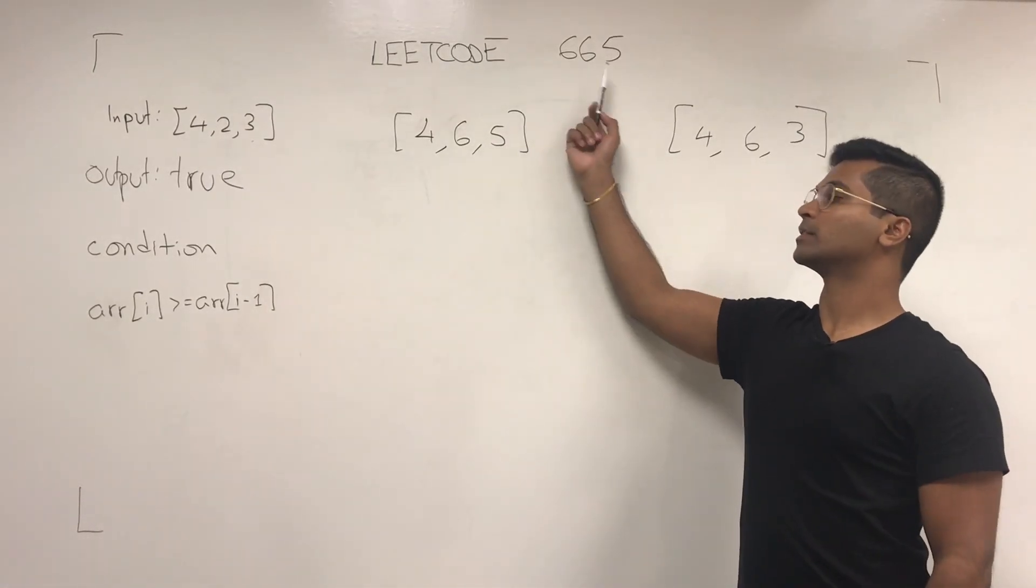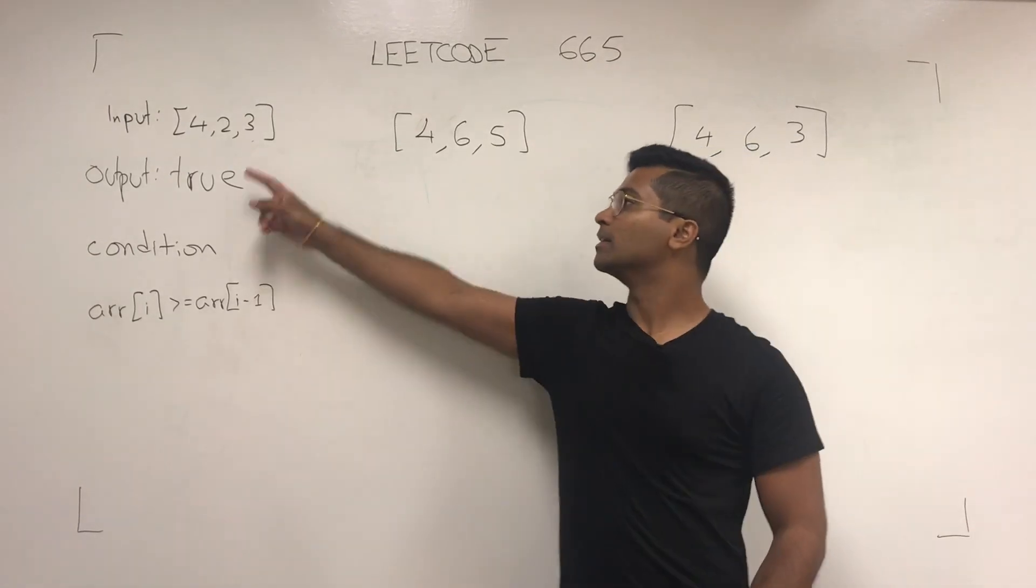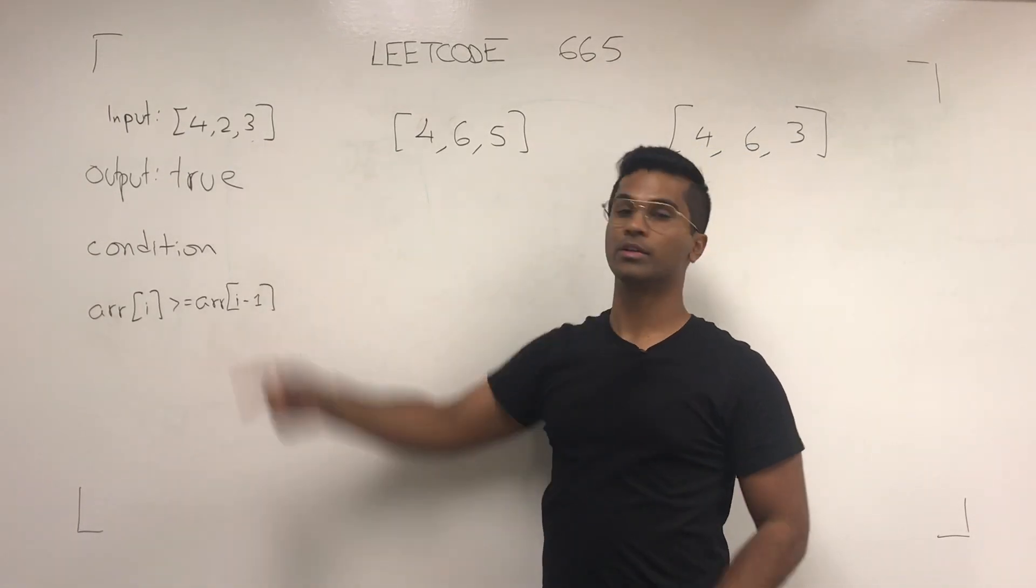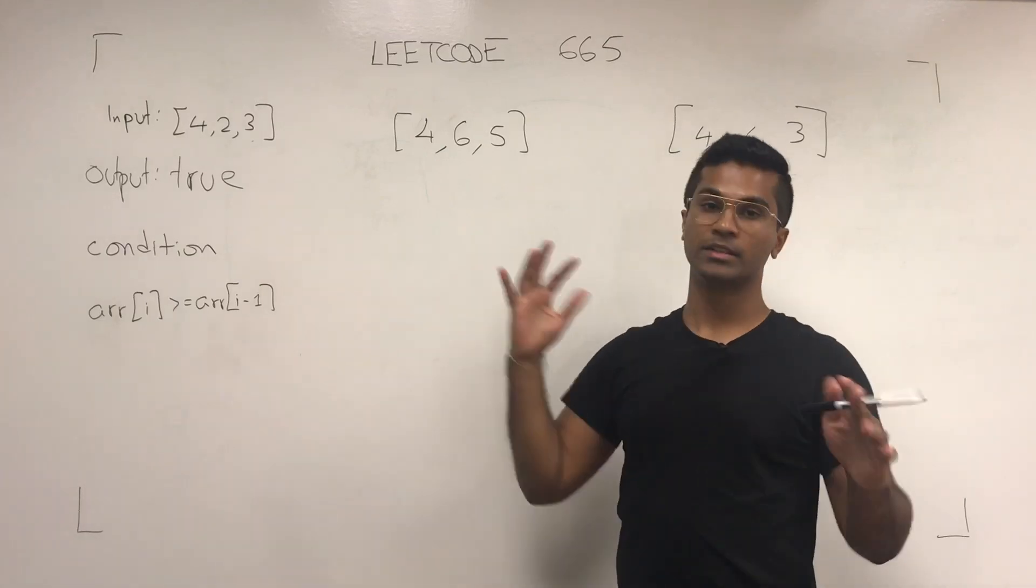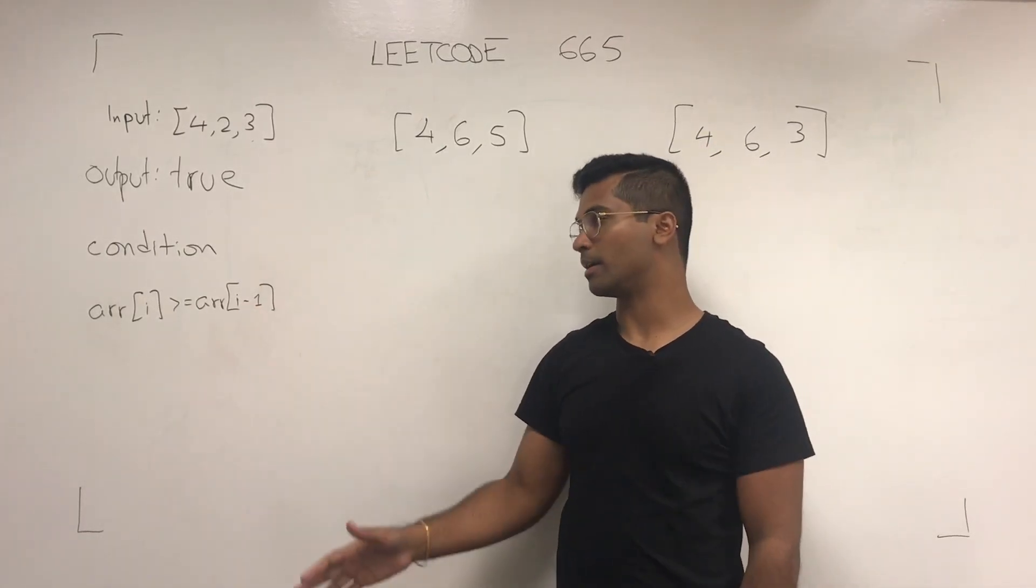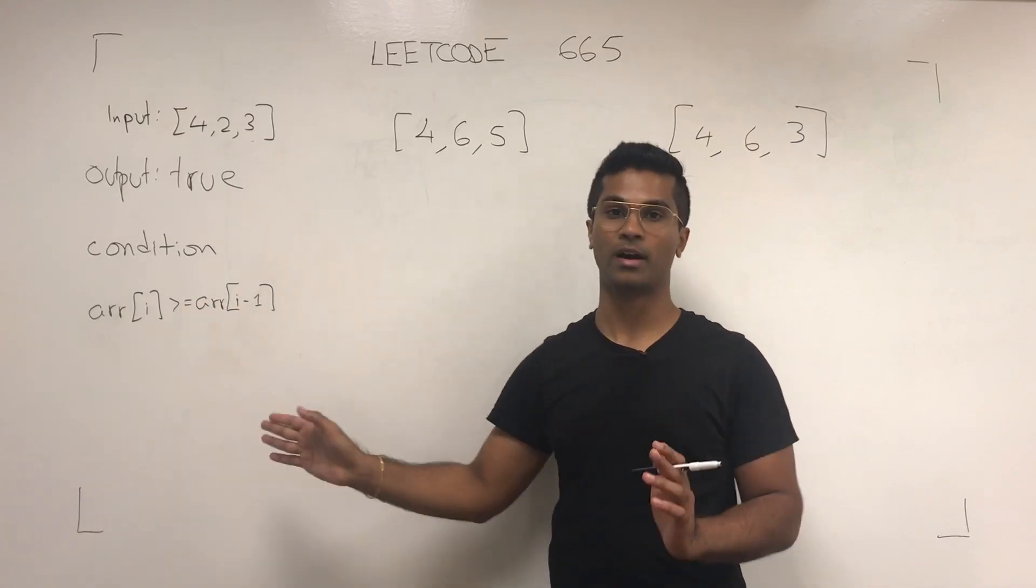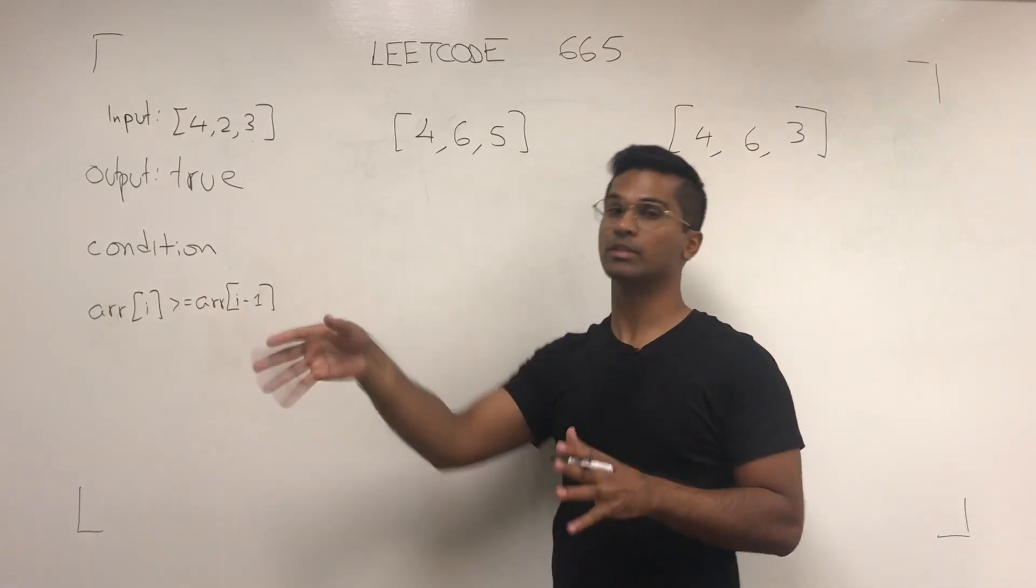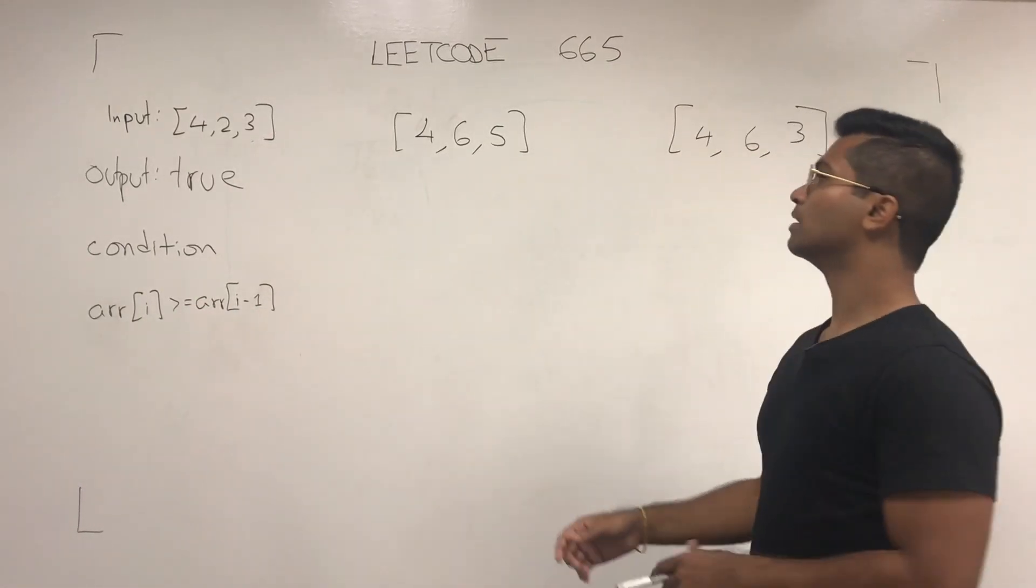What's up everyone? Today we're going to be solving LeetCode 665, Non-Decreasing Array. The input is given like this, the output needs to be true or false, and the condition is every given element must be greater than or equal to the element immediately behind it, and by nature everything behind that one.